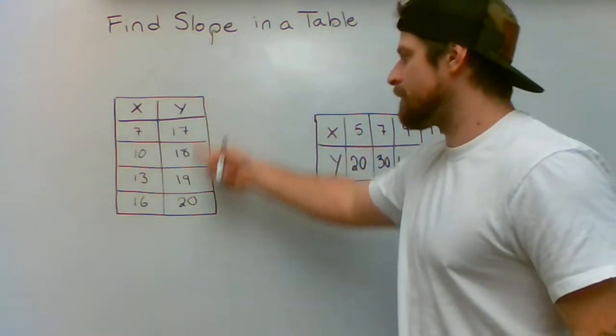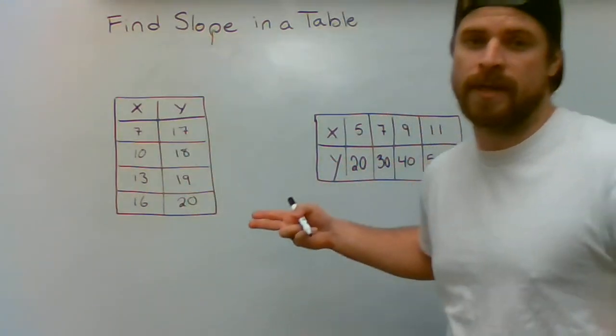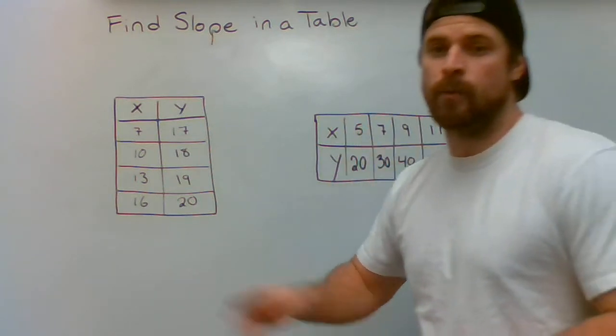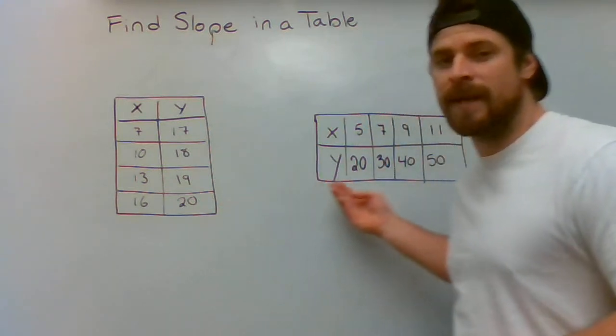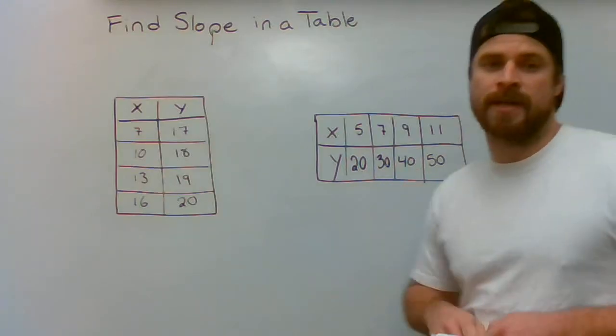One thing you're going to notice, I have a vertical table and a horizontal table written out for you. The reason I chose to do that is because oftentimes kids will do very well with vertical tables, but then they'll make the mistake that I see over and over and over again when that table is written out horizontally.